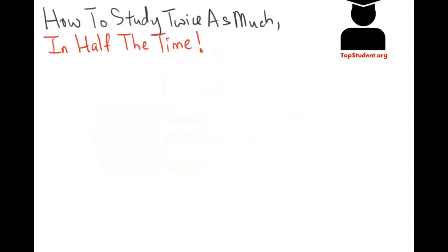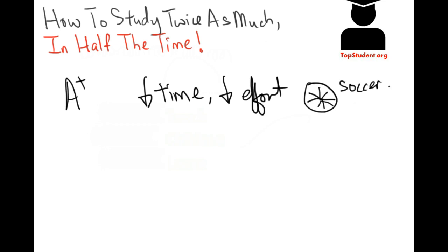When we are able to study when we need to and score well in our tests and exams, that is a successful A-plus student. But when we can do that in less time, with less effort, and still have time to engage in our favorite activities like playing soccer—wow, my god, this is a slam dunk student.